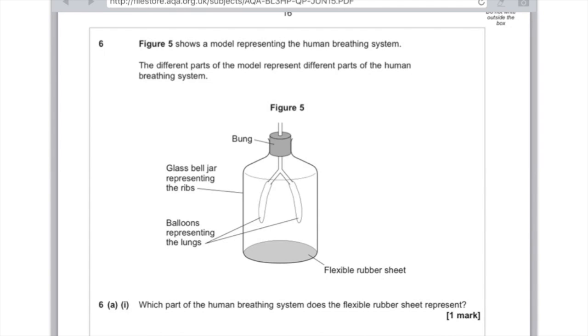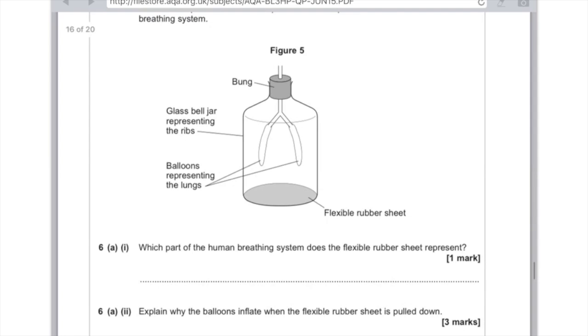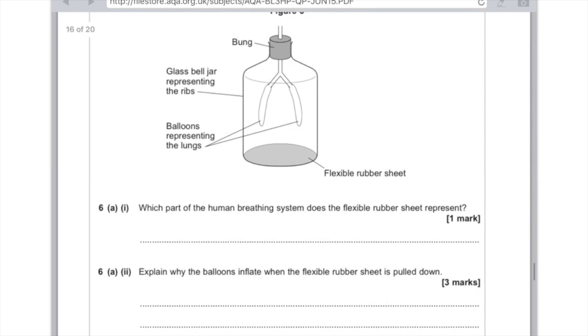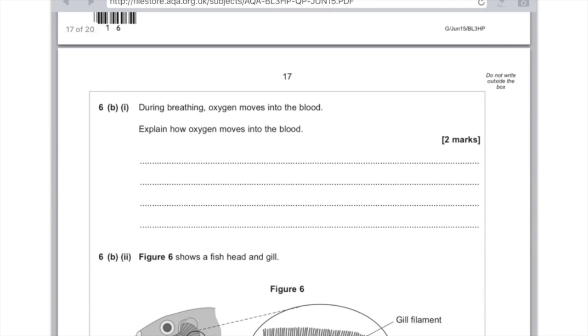Question 6. Figure 5 shows the model representing the human breathing system. Which part of the human breathing system does the flexible rubber sheet represent? That would be the diaphragm because we can see that the balloons are the lungs and the glass bell jar are the ribs. And so it makes sense that the rubber sheet is the muscle sheet at the bottom of our thorax. Explain why the balloons inflate when the flexible rubber sheet is pulled down. Three marks. So make three separate points. You want to say that when the rubber sheet is pulled down, the volume inside the glass jar increases. Therefore, decreasing the pressure and therefore air is sucked into the balloon. Describe breathing. During breathing, oxygen moves into the blood. Explain how oxygen moves into the blood. It's important here that you identify that that is by diffusion. Remember, diffusion is the net movement of gas particles from an area of high concentration to low concentration. So you want to say that the high concentration is in the air and that the low concentration is in the blood.